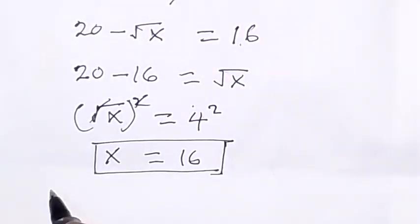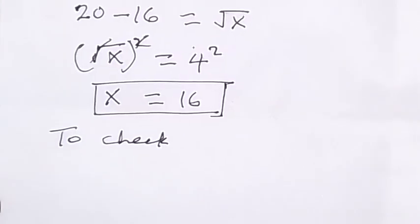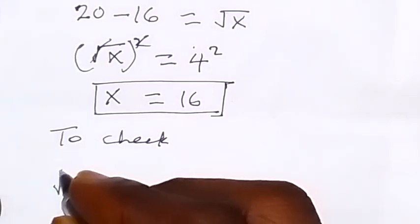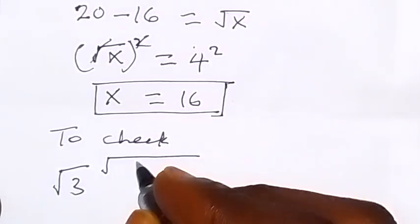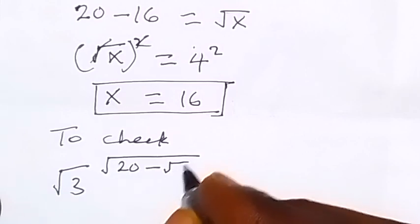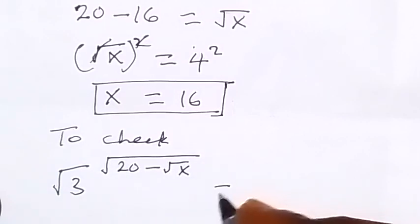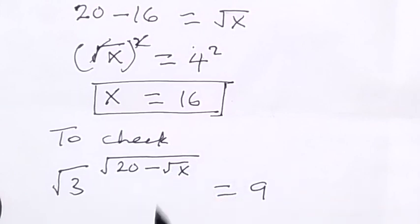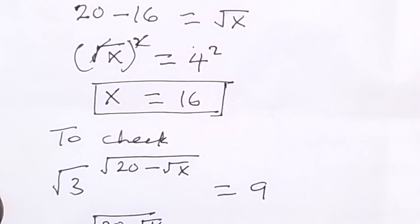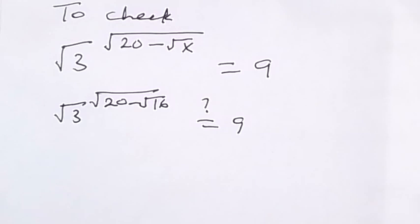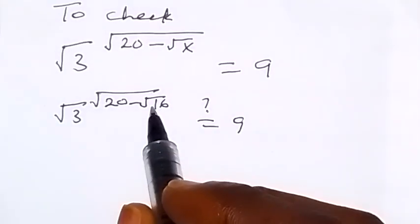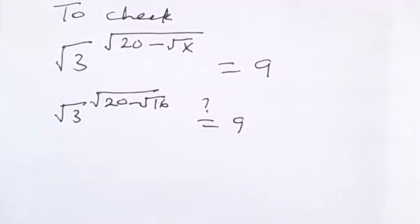Now to check: from what we are given, we have root 3 raised to power root 20 minus root x equals 9. Substituting x equals 16, we have root 3 raised to power root 20 minus root 16. Now, root 16 is 4, and 20 minus 4 is 16.